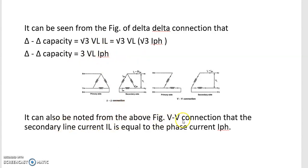It can also be noted from the above figure for V-V connection that secondary line current IL is equal to phase current IPh. In case of delta-delta connection, we have kept one side of the three phase open so that the line current is directly equal to phase current in case of V-V connection.